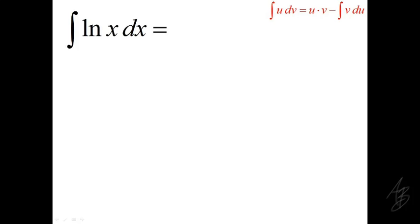For this particular problem, we'll choose u equal to the natural log of x because when we take the derivative of natural log of x, it simplifies and we just get 1 over x. And then what that leaves for dv is simply dx.